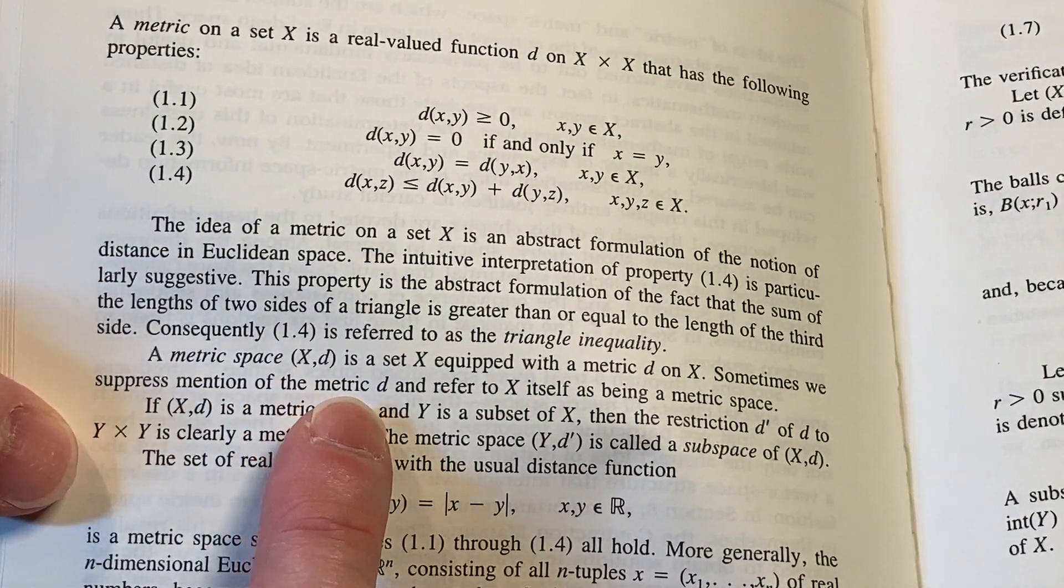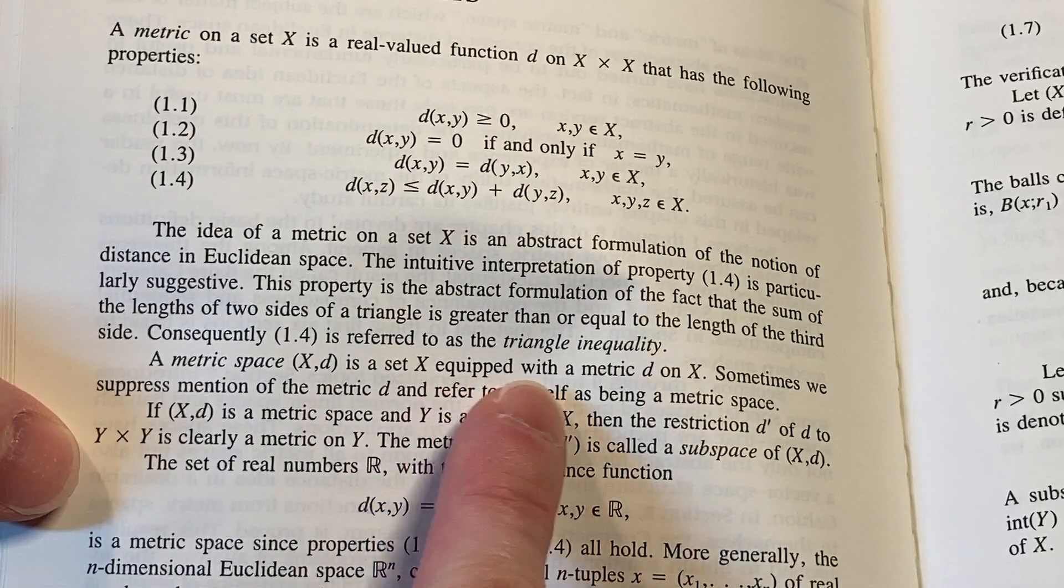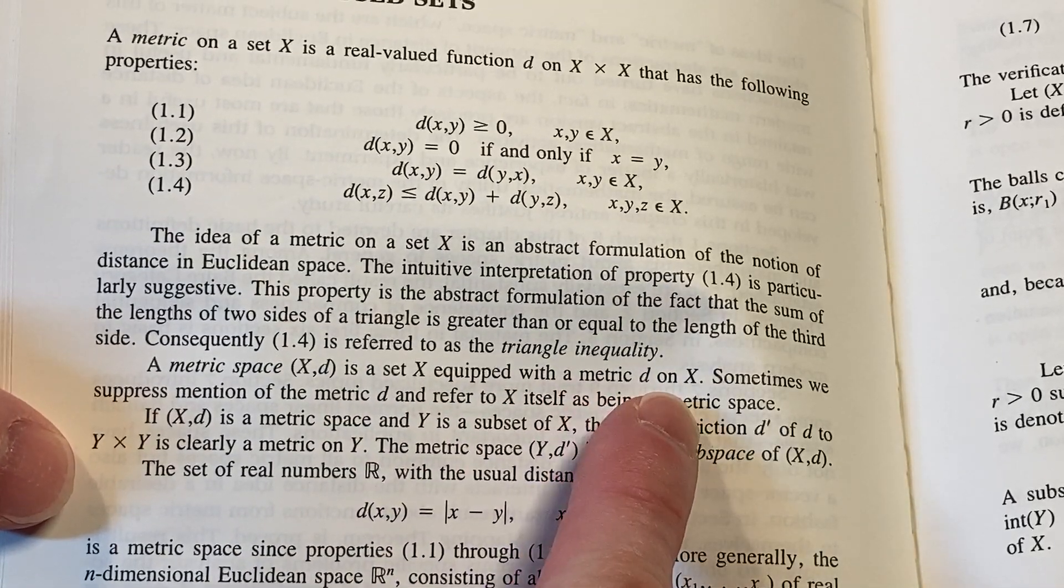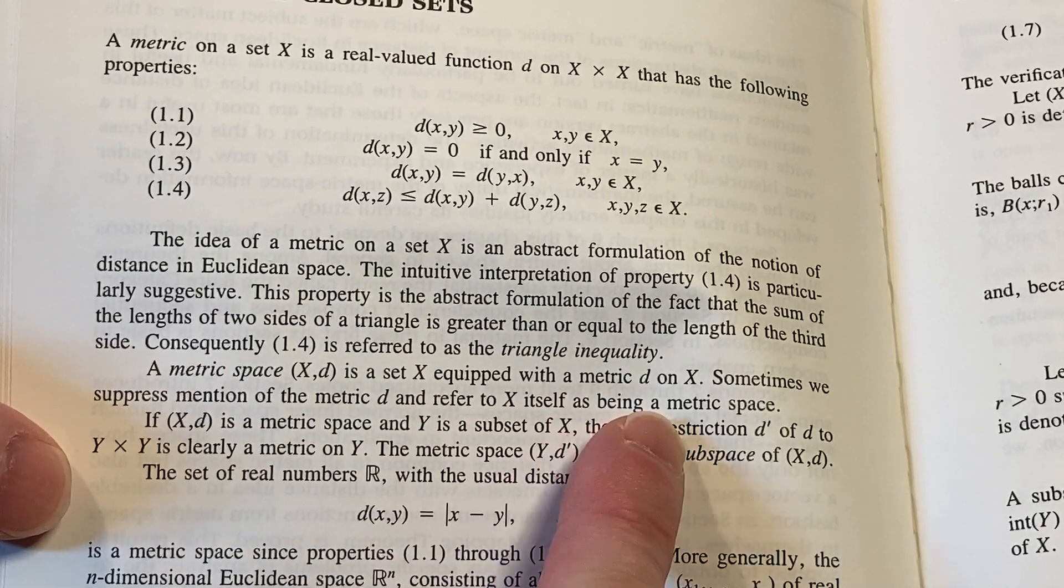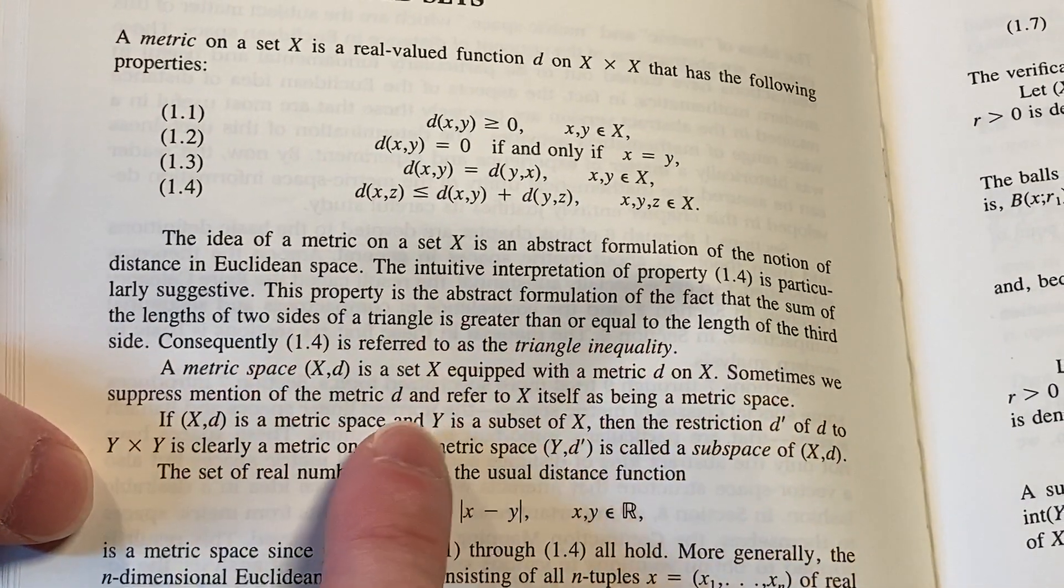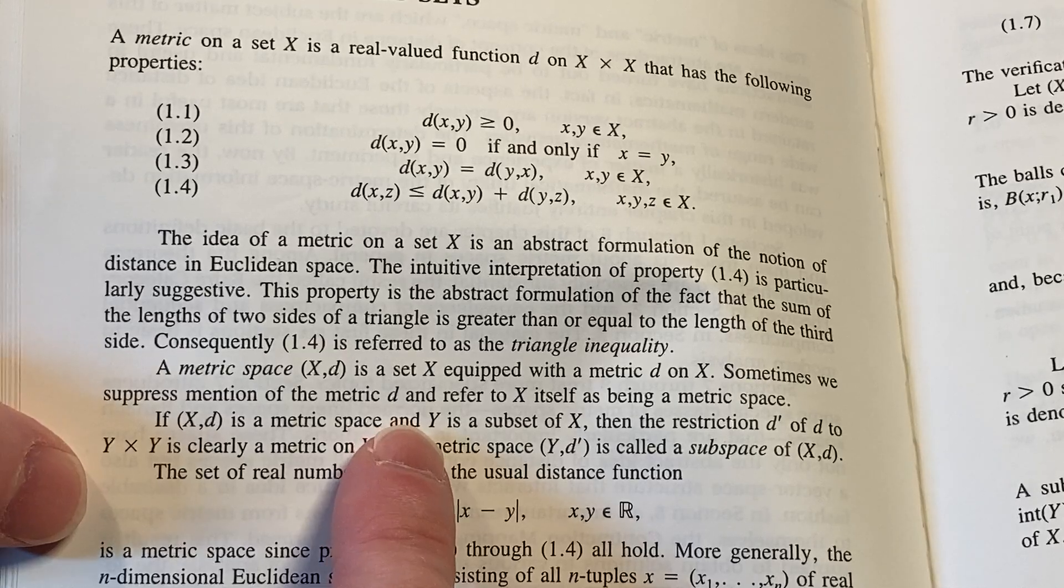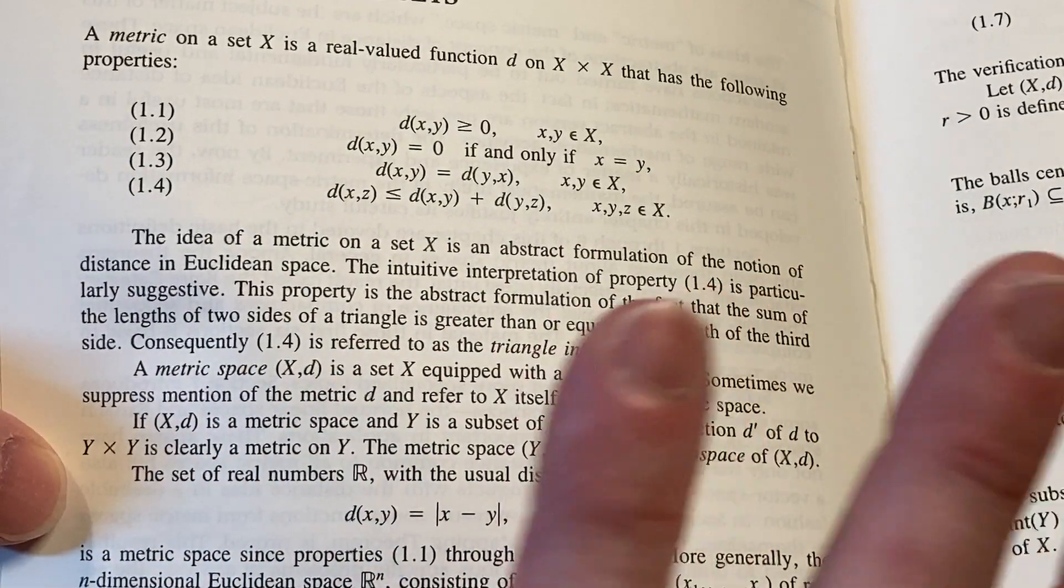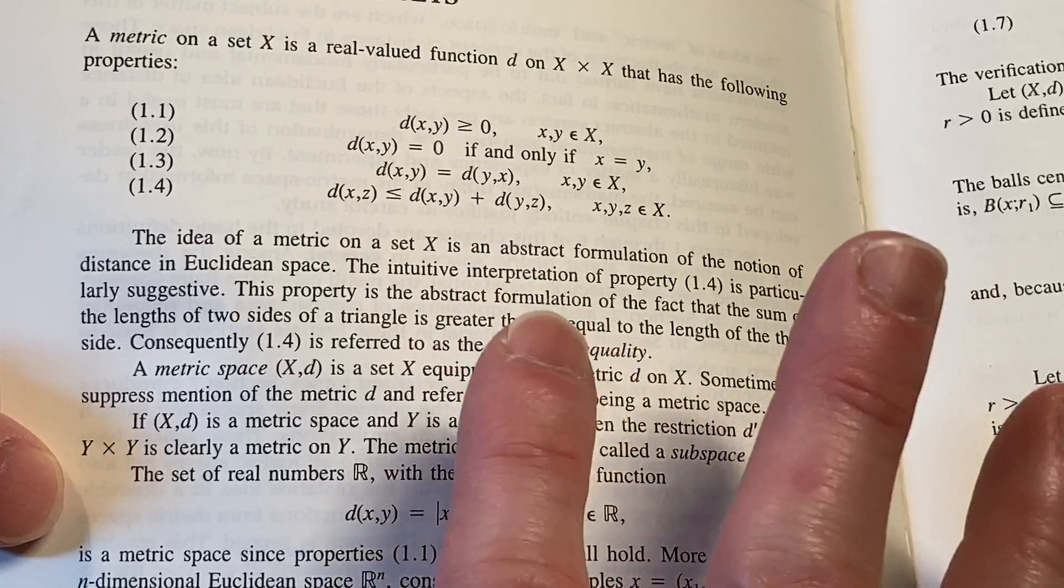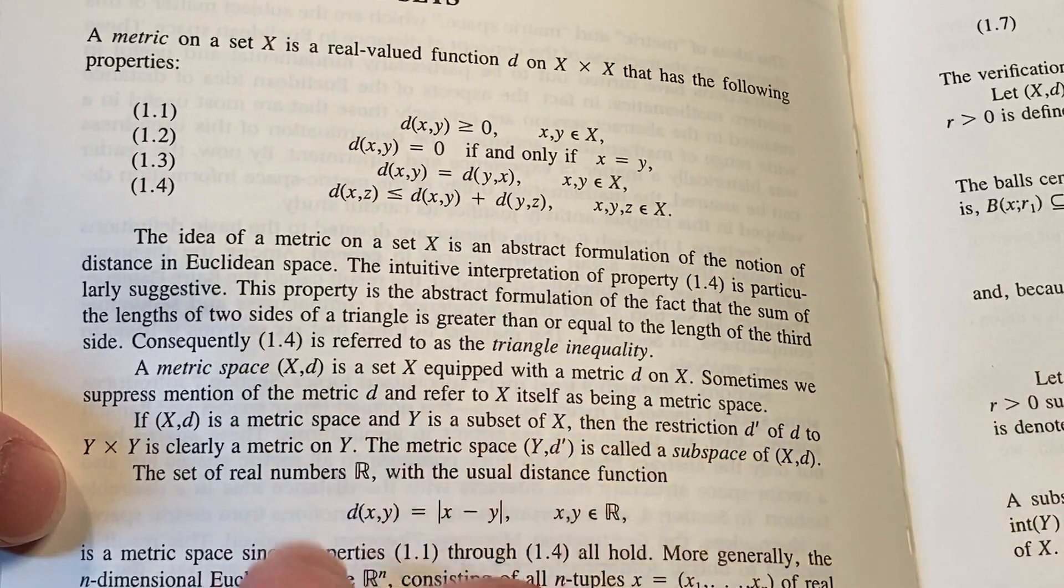A metric space (X,d) is a set X equipped with a metric little d on X. Sometimes we suppress mention of the metric d and refer to X itself as being a metric space. Sometimes it's just not needed or just cumbersome. You're just adding notation. It's not good to overcomplicate things in mathematics. Mathematics is hard enough. Simple math is good math.